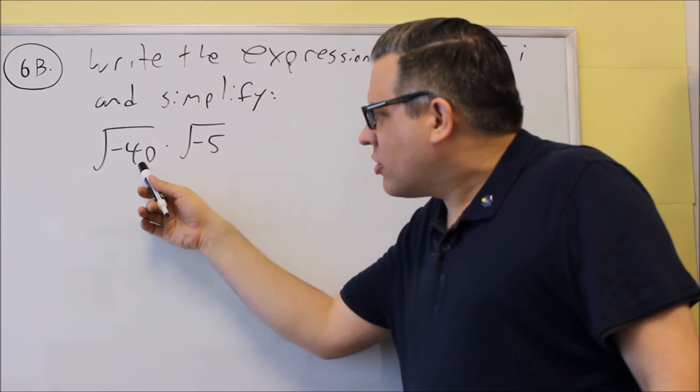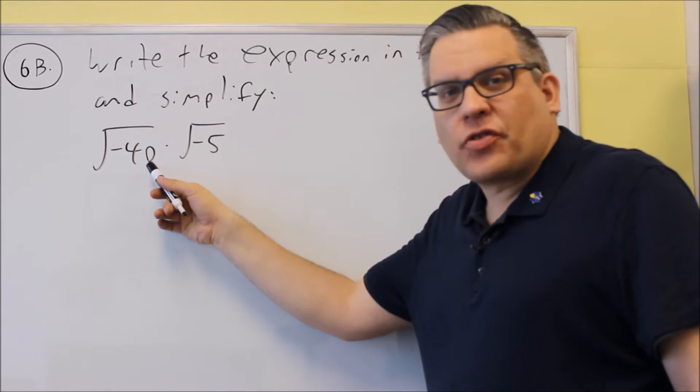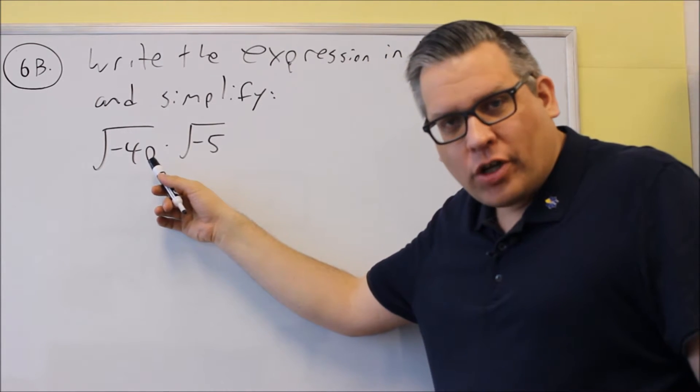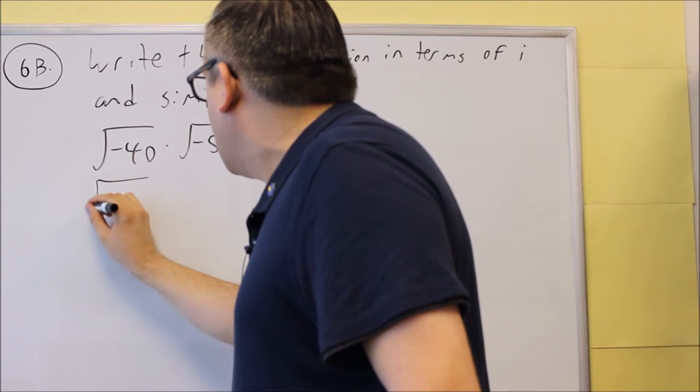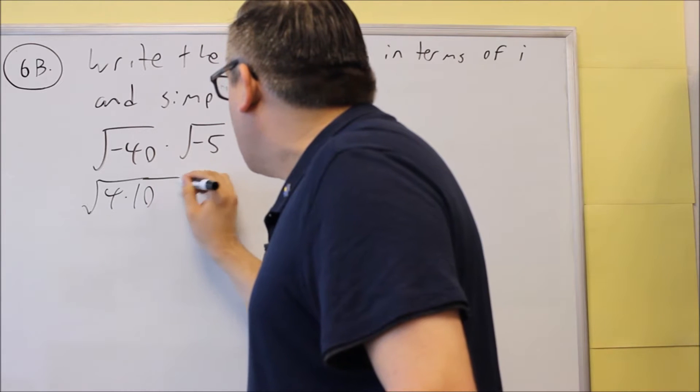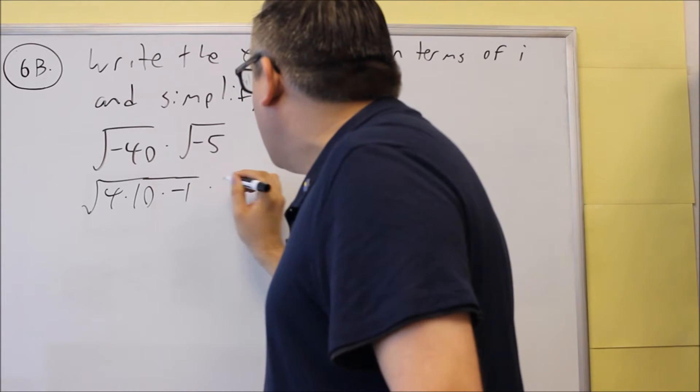We want to break each of these down. We look for the largest perfect square that divides evenly into 40, and that's going to be 4. So we're going to write this as 4, and then it'll be times 10, and then times negative 1 inside.